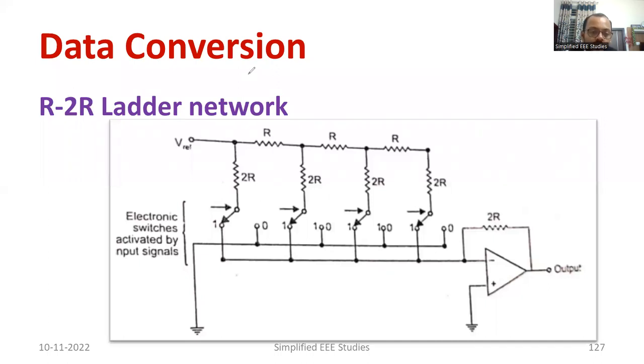Everybody can observe, we have a reference voltage. Then there is a ladder. Can you see the ladder? We have a resistor, then 2R. There is another resistor, then 2R. R2R. So these are called R2R network.